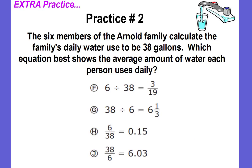Okay, practice problem number two. The six members of the Arnold family calculate the family's daily water use to be 38 gallons. Which equation best shows the average amount of water each person uses daily? So remember there are six members and their total water usage is 38 gallons. Go ahead and pause the video, work the problem in your notes, select your answer choice, and come back and check.